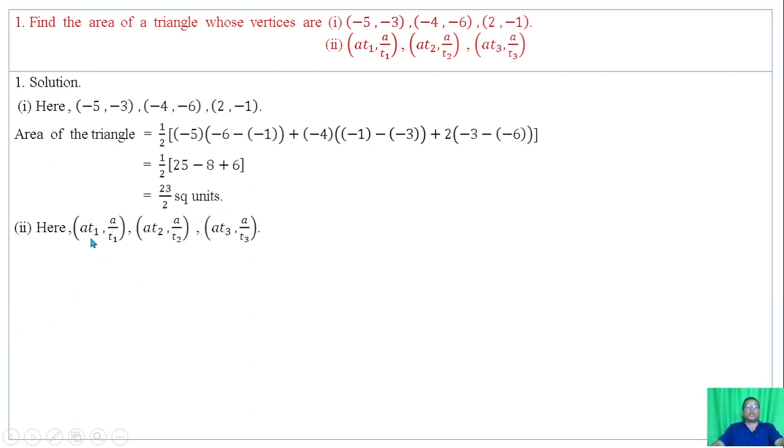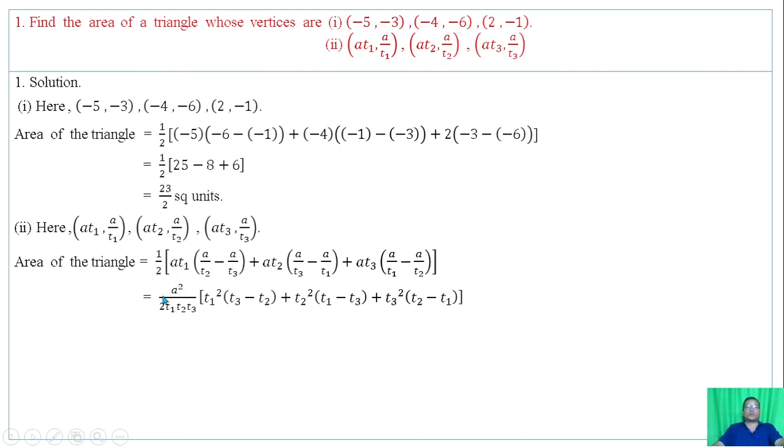Example 2: Using the same formula with x1, y1, x2, y2, x3, y3, we have area of triangle equals half x1(y2 minus y3) plus x2(y3 minus y1) plus x3(y1 minus y2). Substituting values and simplifying gives the answer.